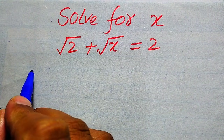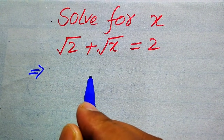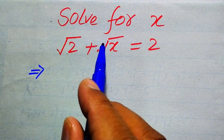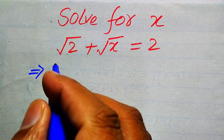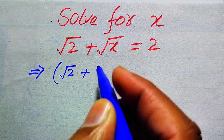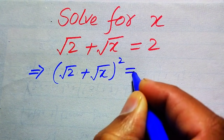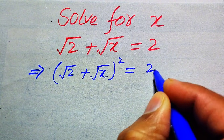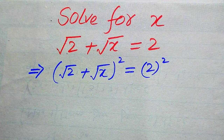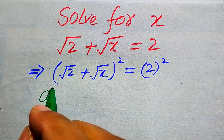Now we move towards the solution of this problem. The very first step we are going to do is take squaring on both sides in order to eliminate both of these two square root signs. So here we write it as: square root of 2 plus square root of x, whole squared, is equals to 2 squared.